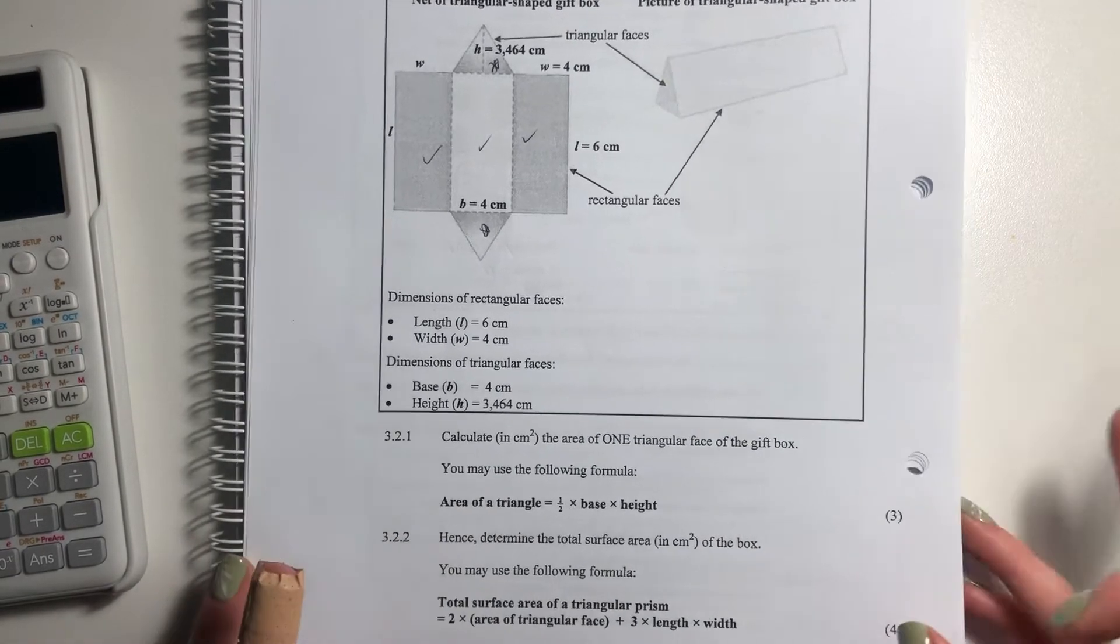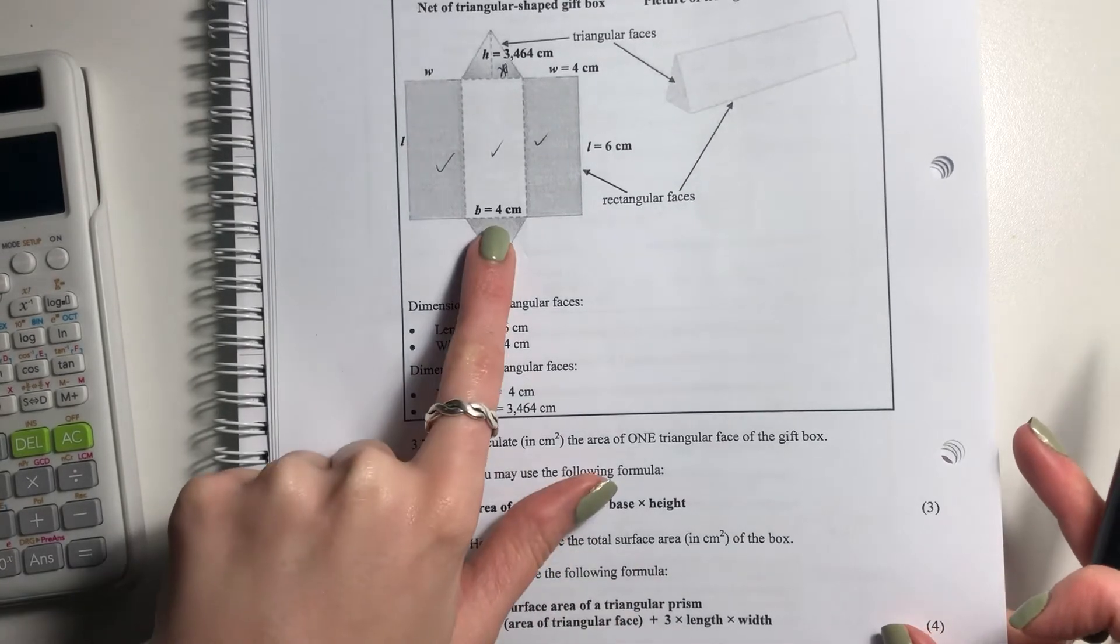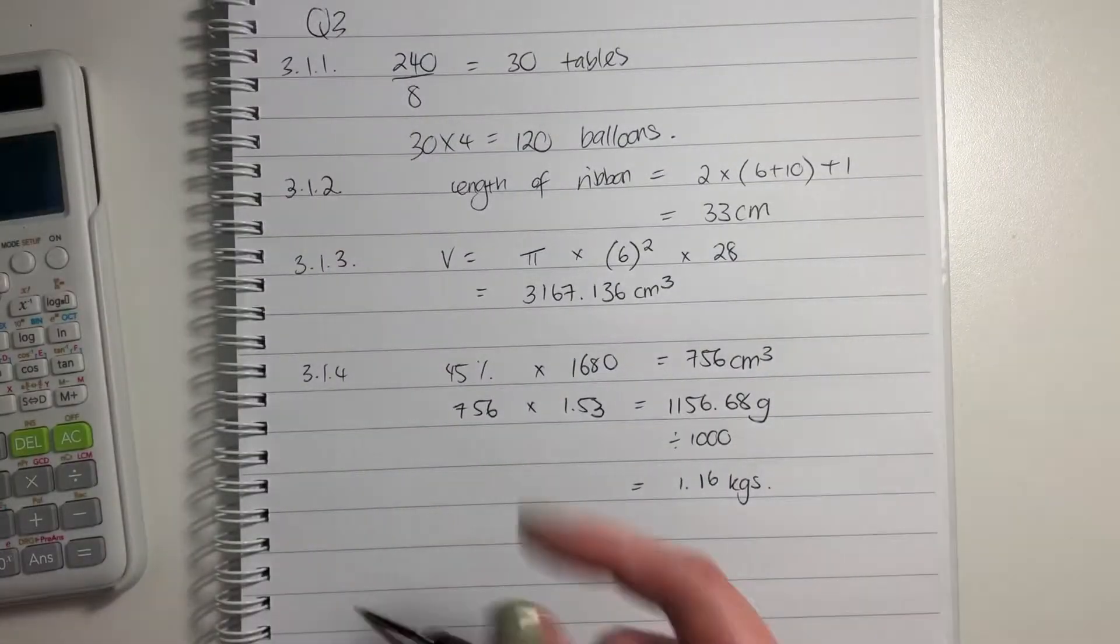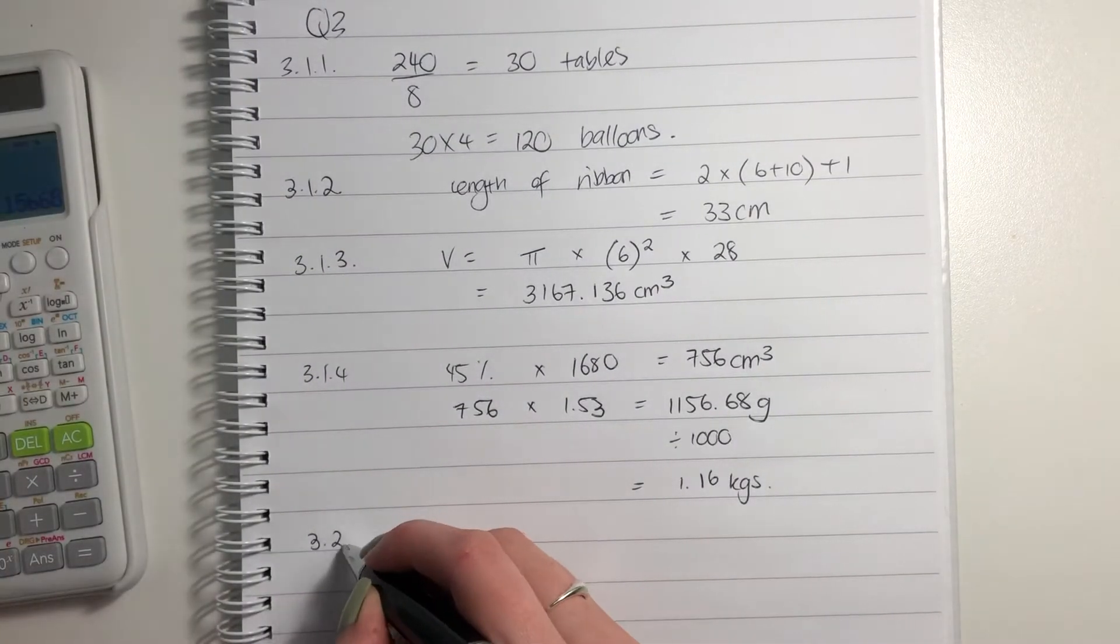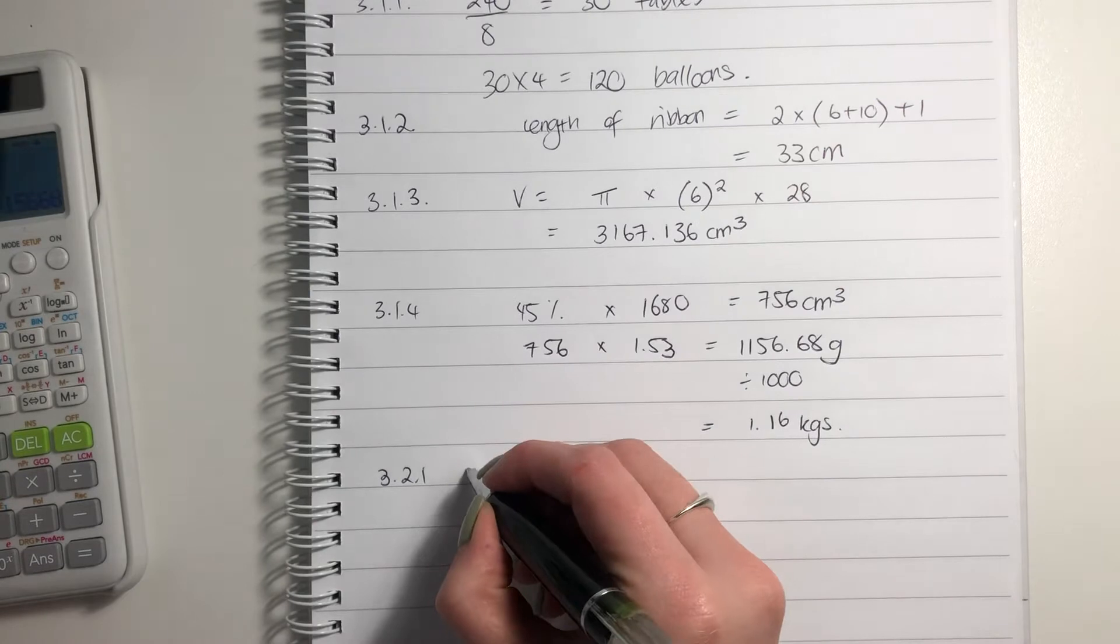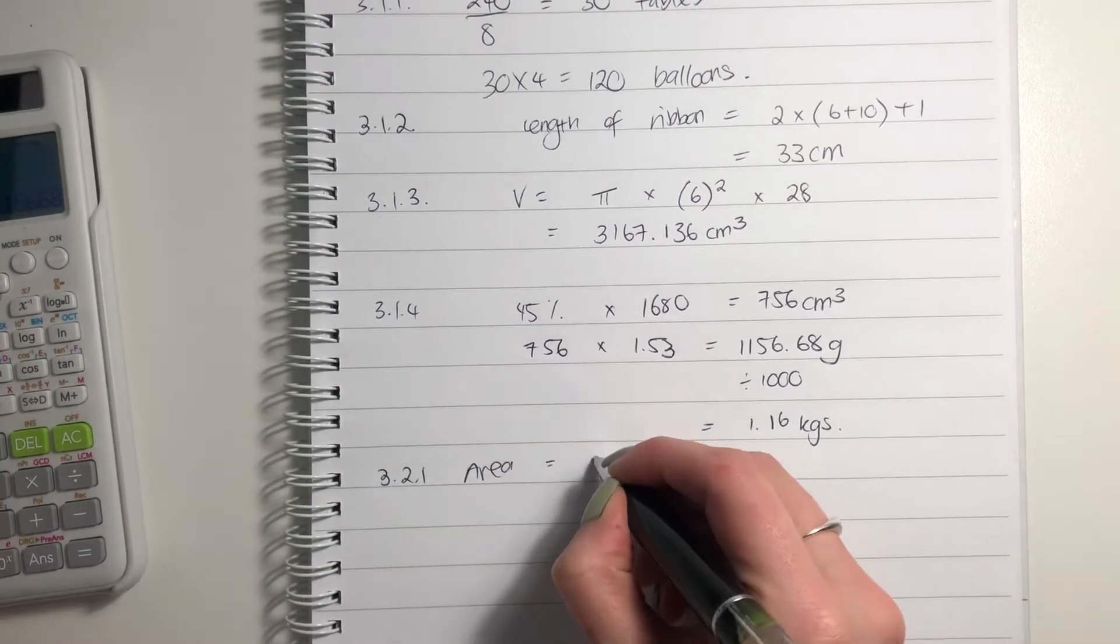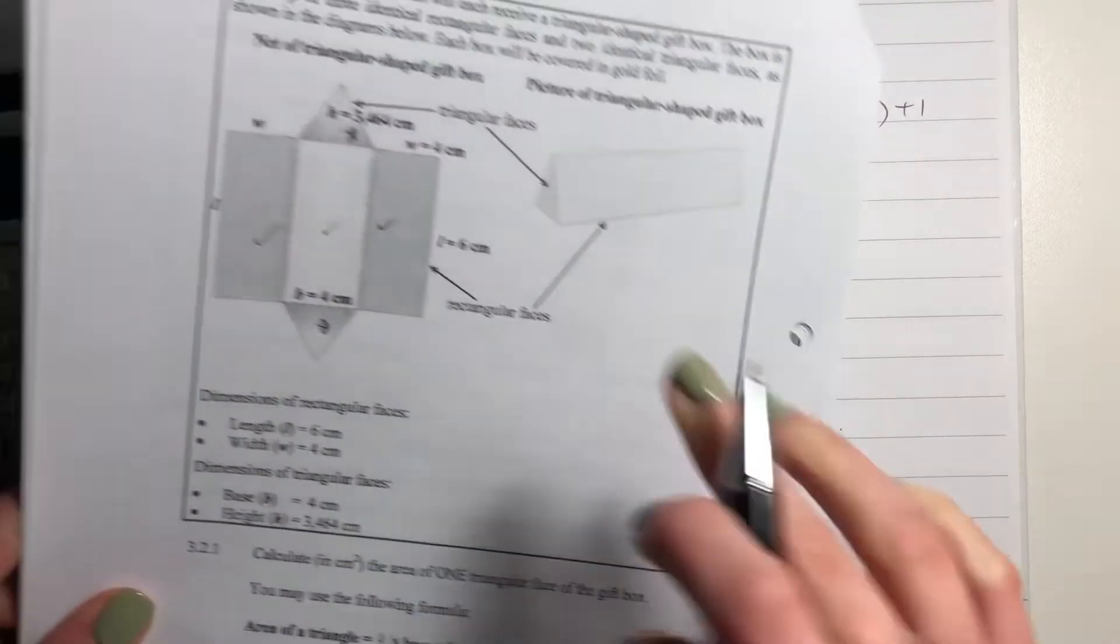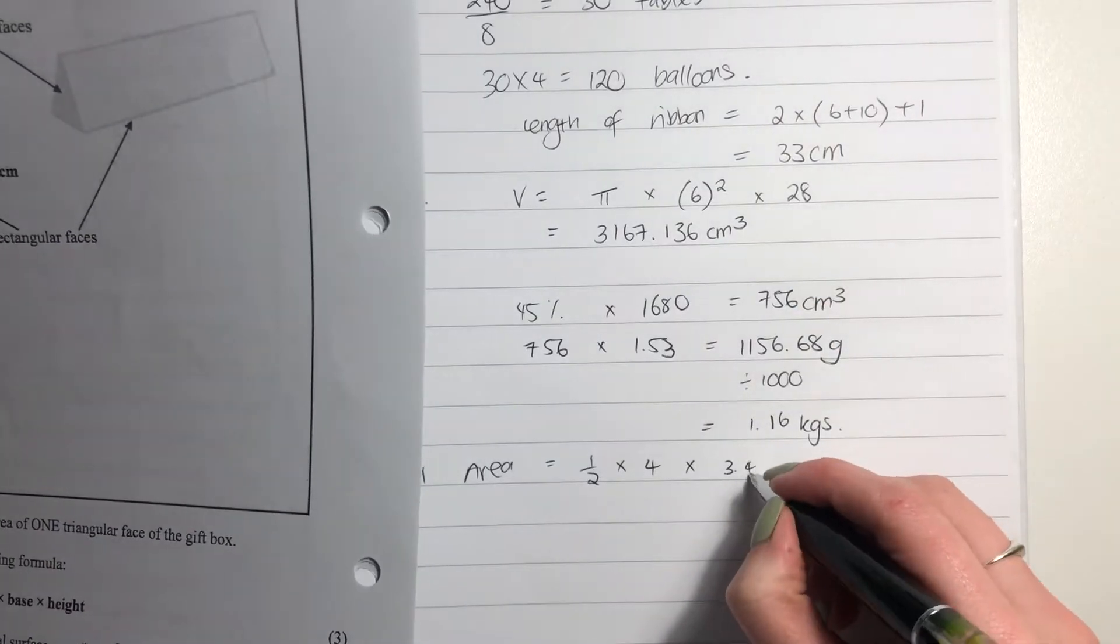It says calculate in centimeters squared the area of one triangular face of the gift box. We can use this formula, okay? Base here is four. Height is 3.464. So we're going to say 3.2.1 area equals half times base times 3.464.